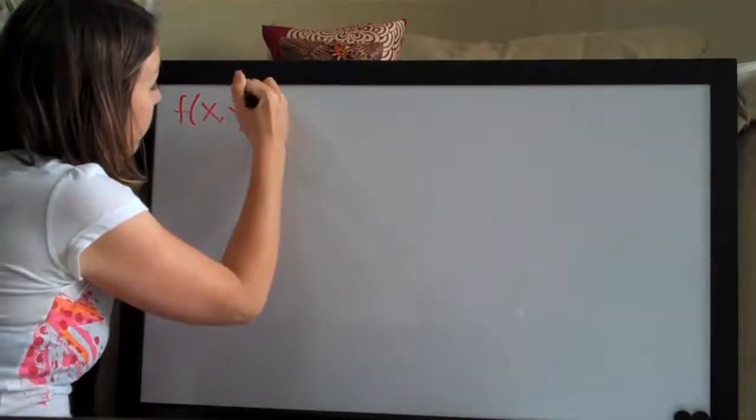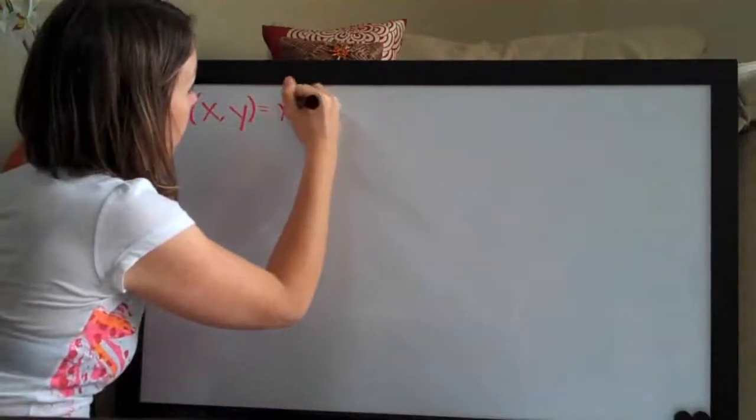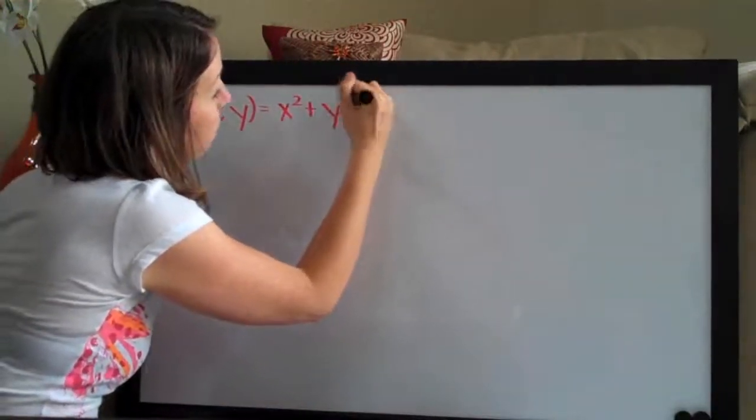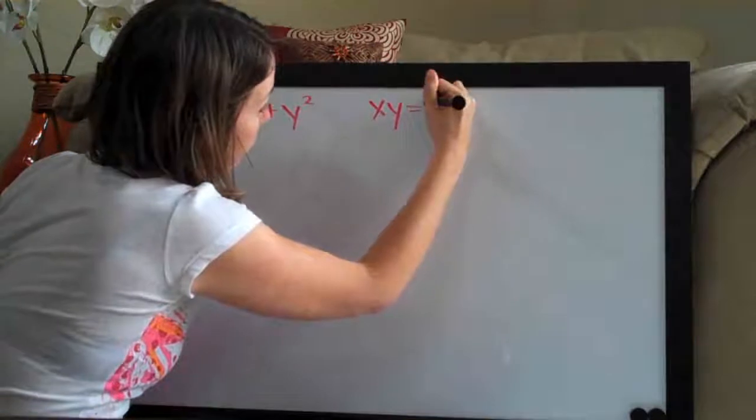Hi everyone! Welcome back to integralcalc.com. We're going to be doing a Lagrange multiplier problem today. This one asks us to use Lagrange multipliers to find the maximum or minimum points of the following function. The function is f equals x squared plus y squared, and it is subject to the constraint xy equals 1.